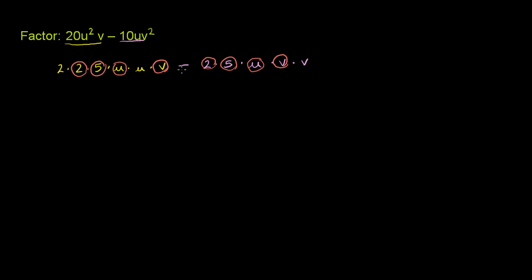So the greatest common factor is 2 times 5 times u times v. I could rewrite this expression. If we wrote 2 times 5 times u times v, and we say this expression is equal to this times what? Well, if you factor the 2 times 5 times u times v out, all you're going to be left with in this first term is the 2 times u here. So 2u here.